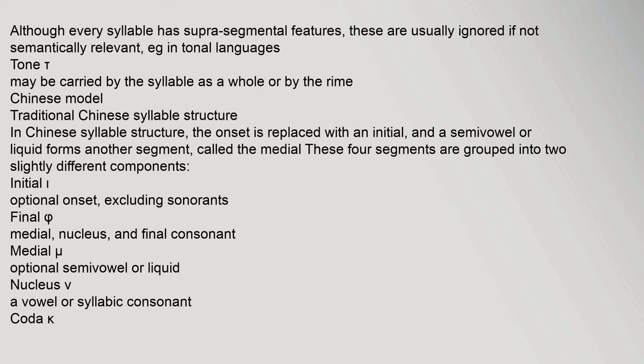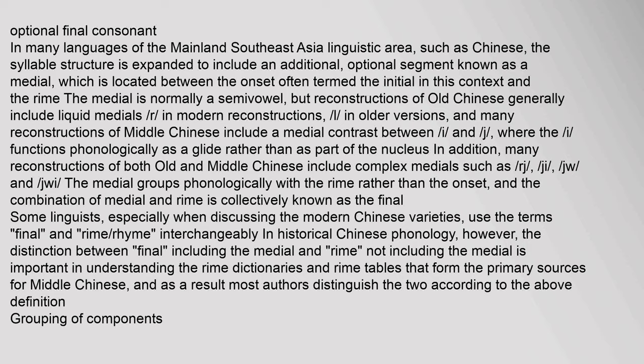In Chinese syllable structure, the onset is replaced with an initial, and a semivowel or liquid forms another segment called the medial. These four segments are grouped into two components: the initial (optional onset, excluding sonorance) and the final, which includes the medial, nucleus, and coda. In many languages of mainland Southeast Asia, such as Chinese, the syllable structure is expanded to include an additional optional segment known as a medial, located between the onset and the rhyme. The medial is normally a semivowel, but reconstructions of Old Chinese generally include liquid medials.